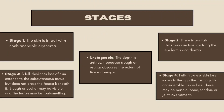Pressure sores are classified in stages. Stage 1 is intact skin with non-blanchable erythema — the skin is intact and there is a little redness. Stage 2 involves partial thickness skin loss involving the epidermis and dermis.